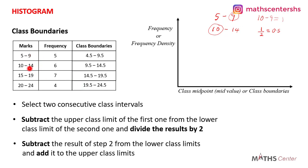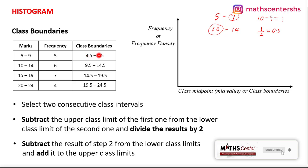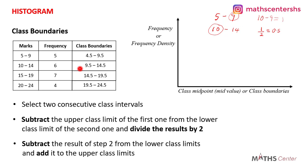To summarize: select two consecutive class intervals, subtract the upper class limit of the first from the lower class limit of the second and divide by 2, then subtract that result from the lower class limits and add it to the upper class limits. For a given class boundary, the smaller number is the lower class boundary and the bigger number is the upper class boundary.